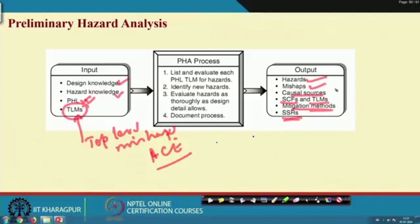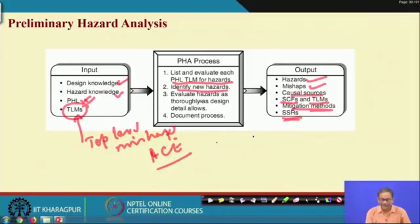The PHA process involves listing and evaluating each PHL top-level mishap (TLM) for hazards. Suppose there are 50 preliminary hazards in a system — for every PHL there will be some top-level mishaps. You list all of them, identify any new hazards, evaluate hazards as thoroughly as design details allow, and document the process.